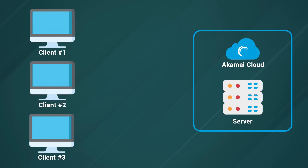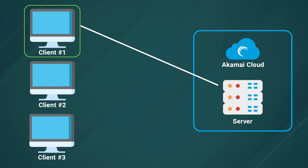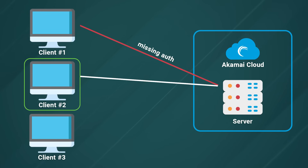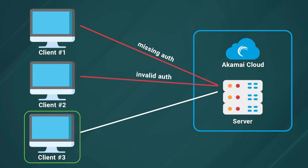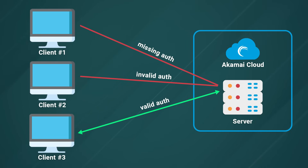Let's look at a practical example using an architecture diagram that shows three clients making requests to a server running in the Akamai cloud. The first client makes an authenticated request but leaves out the authorization header, so the request is blocked at the origin server. The second client includes an authorization header but with an invalid or expired token, so that request also makes its way all the way to the origin server, which has to check that invalid token and reject the request. The third client makes a valid authorized request, gets verified, and the response gets returned. With each of these verification processes, the server is being asked to do more work.